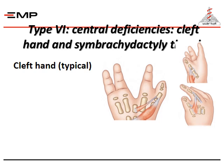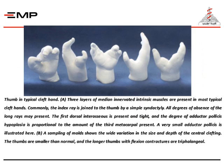This is a photo of a typical cleft hand. In typical cleft hand, the three layers of median-innervated intrinsic muscles are present in most typical cleft hands. Commonly, the index ray is joined to the thumb by a simple syndactyly, or degrees of absence of the long rays may be present.